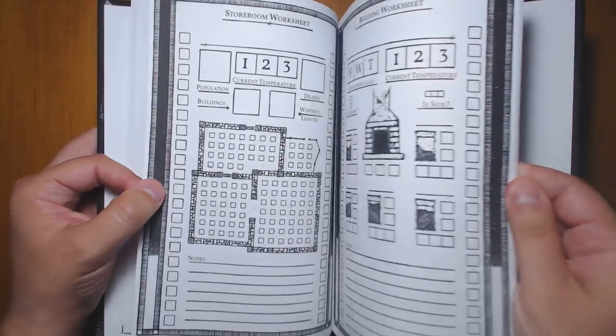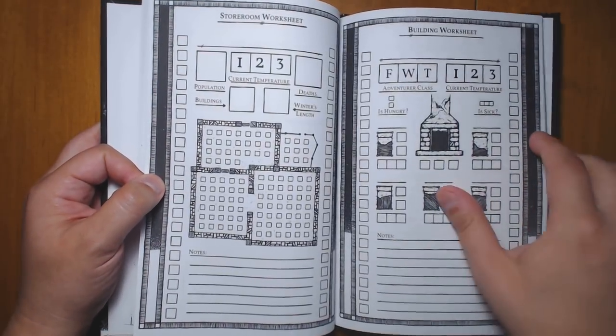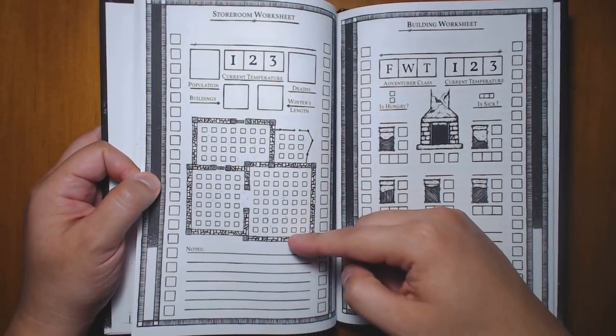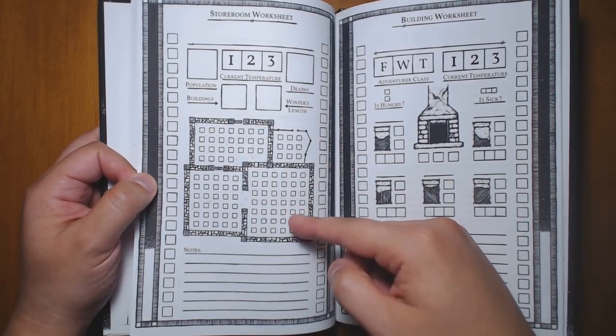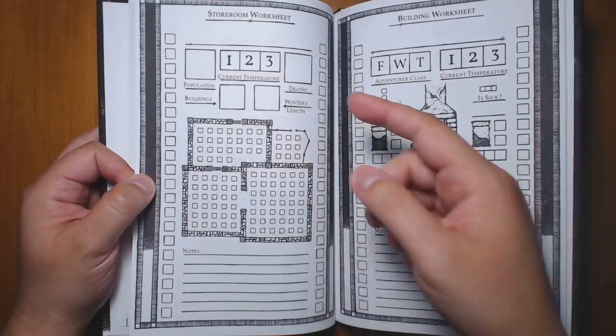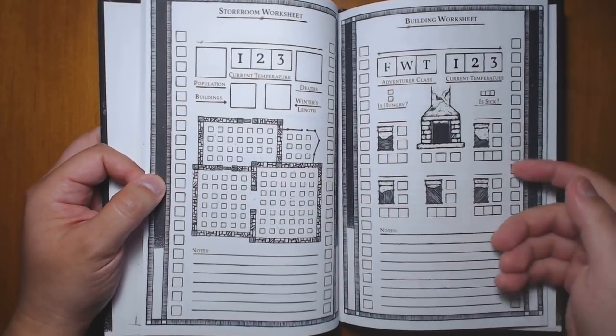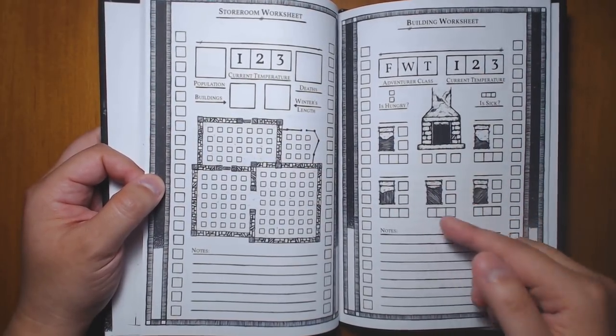We have some handouts that you can print. This is the storeroom worksheet that the GM runs, where you keep track of the main different resources that you have and the population and the current temperature and so on. And each player gets this little sheet for their house tracking their villagers.